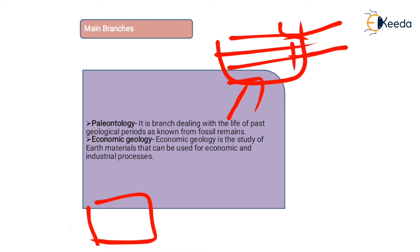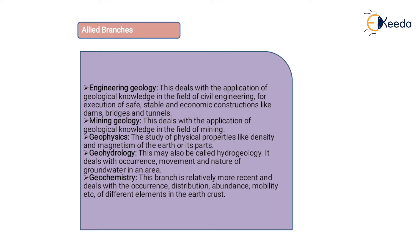Paleontology is the branch dealing with the life of past geological periods known from fossil remains. Economic geology is the study of earth materials that can be used for commercial and industrial processes, like economic minerals. Their properties, importance, mode of formation, and what type of mining is required are all studied in economic geology.